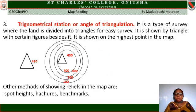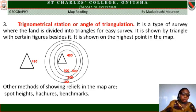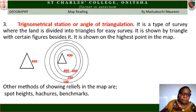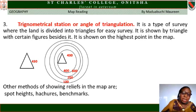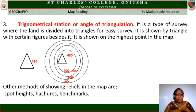Trigonometrical stations, or angles of triangulation. This is a type of survey where the land is divided into triangles for easy solving. It is shown by a triangle with certain figures beside it and is placed on the highest point on the map. For example, a triangle with the figure 330 means that particular spot has been accurately measured. The highest point from the contour line is 400, but that spot measured 330 is a trigonometrical station where angles of triangulation are measured.